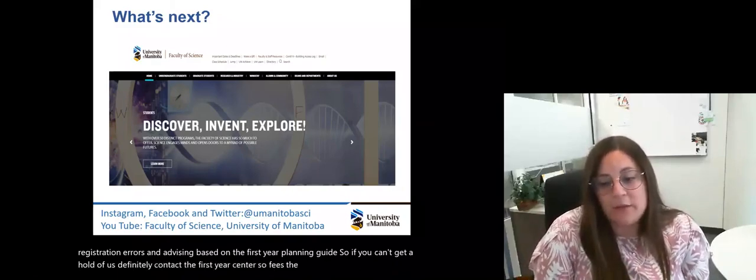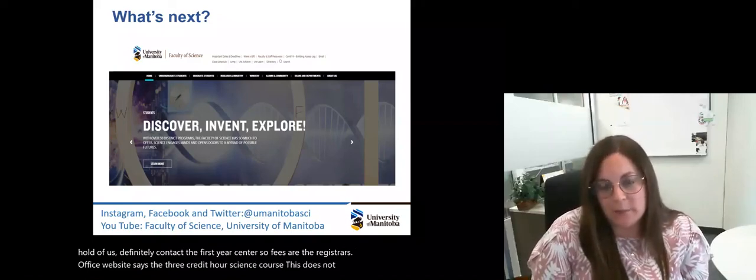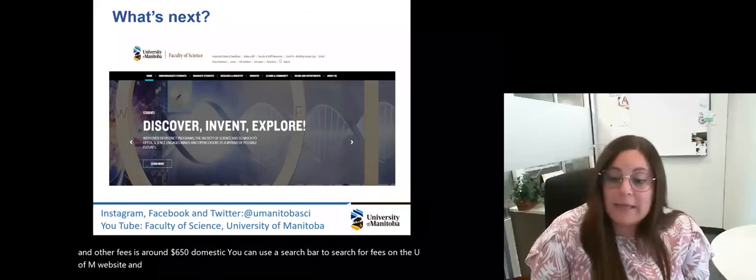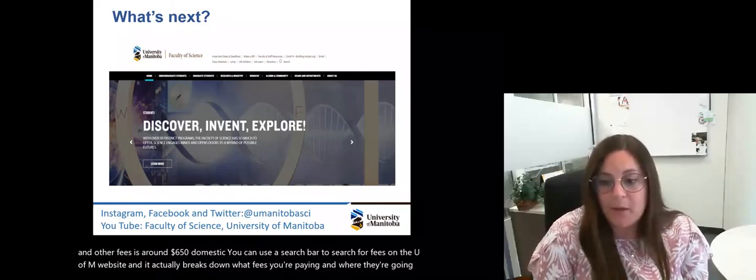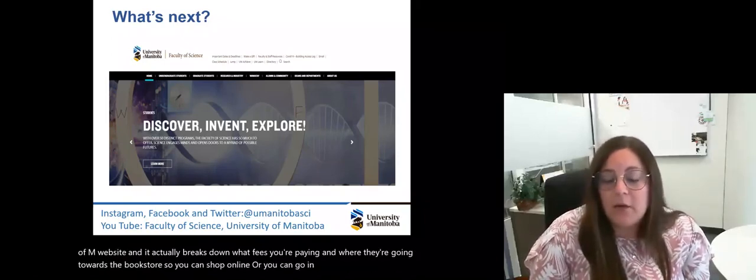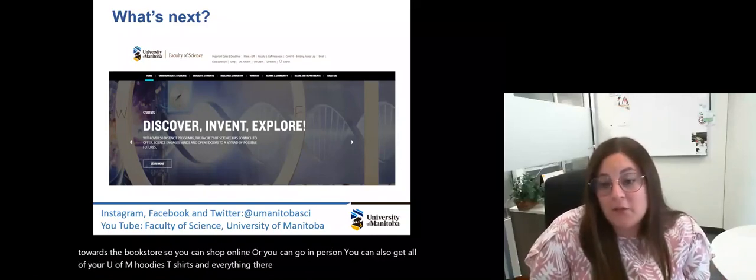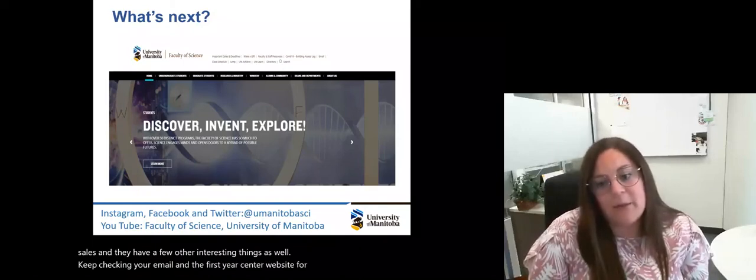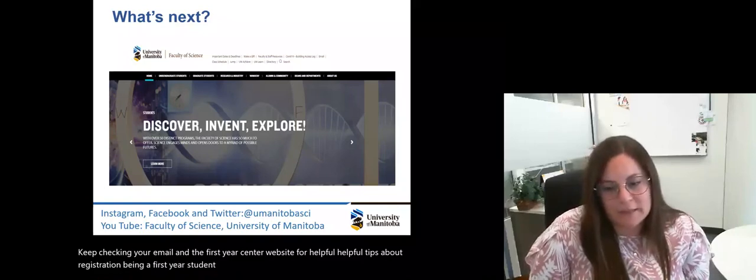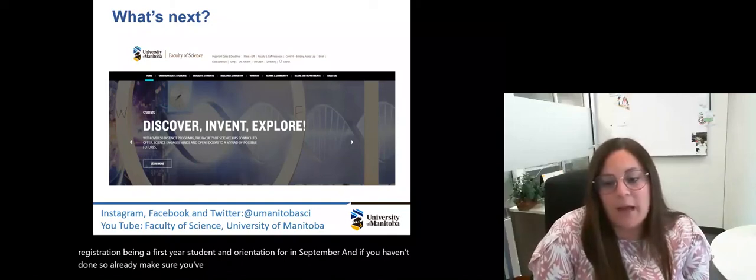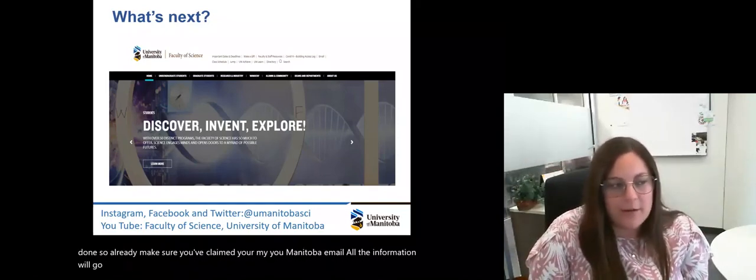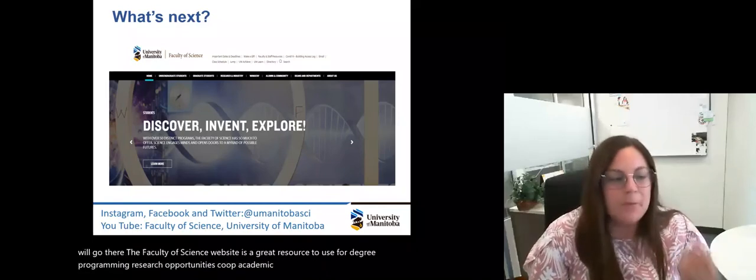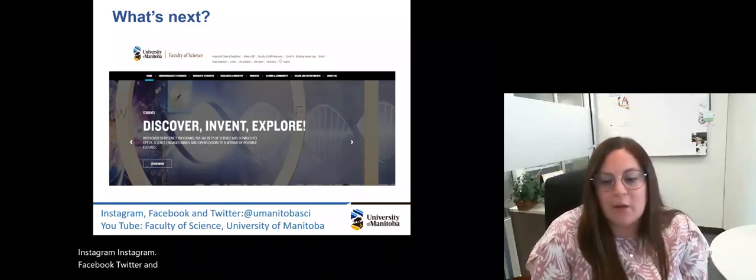So fees. The Registrar's Office website says a three credit hour science course, this does not include your textbook and other fees, is around $650 domestic. You can use a search bar to search for fees on the U of M website and it actually breaks down what fees you're paying and where they're going towards. The Bookstore—you can shop online or you can go in person. You can also get all of your U of M hoodies, t-shirts and everything there. Keep checking your email and the First Year Center website for helpful tips about registration, being a First Year student, and orientation in September. And if you haven't done so already, make sure you've claimed your MyUManitoba email. All the information will go there. The Faculty of Science website is a great resource to use for degree programming, research opportunities, co-op, academic resources. And then on your screen, it shows our Instagram, Facebook, Twitter, and also our YouTube channel.